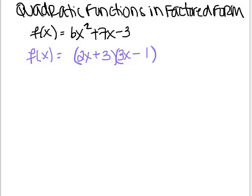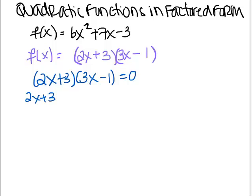Now if I wanted to find the zeros of this quadratic, or where it crossed the x-axis, I would just set my factored form equal to 0. And I'm looking at the zero product property, which tells me that if two factors are being multiplied together to equal 0, then either one of them could be 0. So I'll have a solution when 2x + 3 = 0 and a solution when 3x - 1 = 0. So my answers would be -3/2 and 1/3. Meaning this quadratic is going to cross the x-axis at -3/2 and positive 1/3.